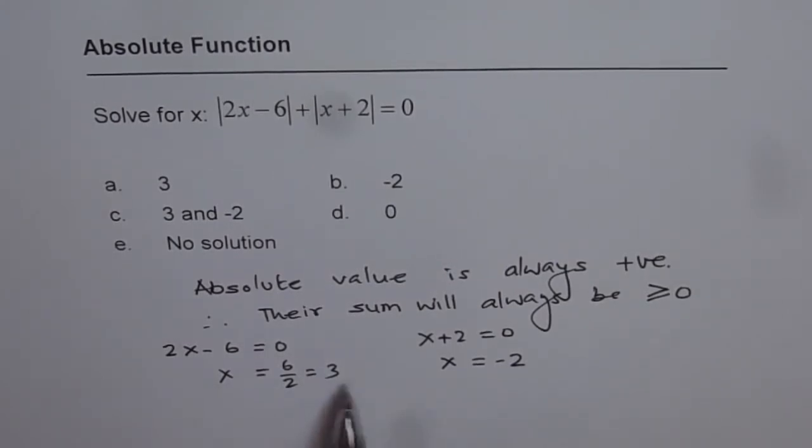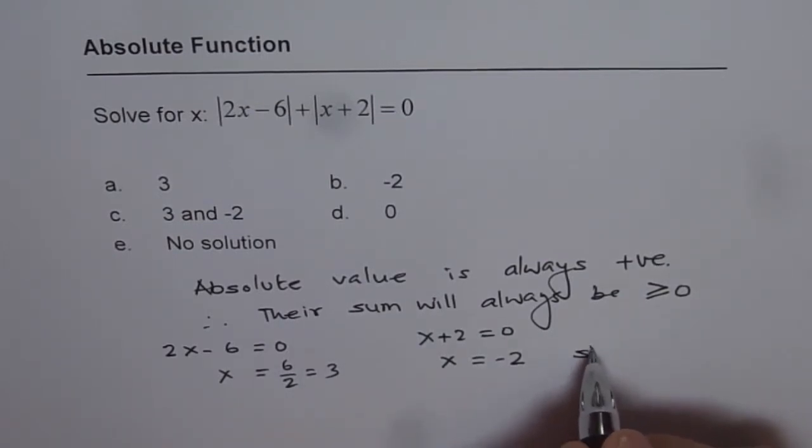Now, x cannot be 3 or minus 2 at the same time, right? Since they are different, not same, we have no solution.